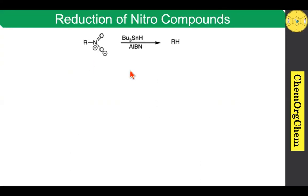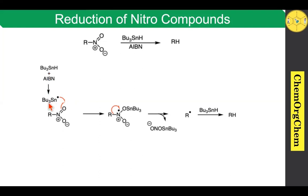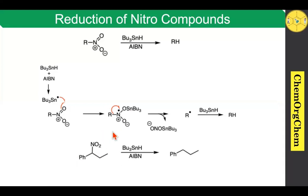Next we move on to reduction of nitro compounds. This is one important method to convert aliphatic nitro compounds into the corresponding hydrocarbon product. In the mechanism, when you use tributyltin hydride and AIBN, which produces tributyltin radical, which readily attacks the oxygen atom, producing the corresponding radical intermediate. Then the R–nitrogen bond cleaves homolytically, producing the byproduct along with R radical. This radical readily takes the proton from tributyltin hydride, which produces the corresponding hydrocarbon product. This method is useful only for aliphatic nitro compounds.